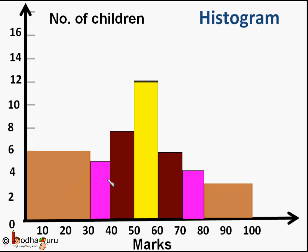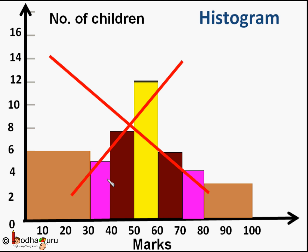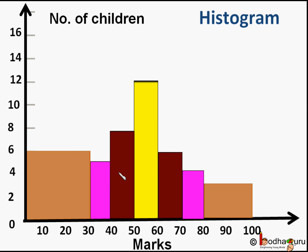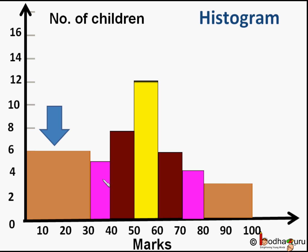So this graph may look okay at first glance, but it is not. Why? For example, the 80 to 100 class has the lowest frequency — 3 only. But the area of this rectangle is quite large as the class width is 20. So its area is 3 into 20, which is equal to 60. The area of the rectangle for the 0 to 30 class is 6 into 30, which is equal to 180. This area is actually greater than the area of the rectangle of the 50 to 60 class, which is 12 into 10, which is equal to 120.